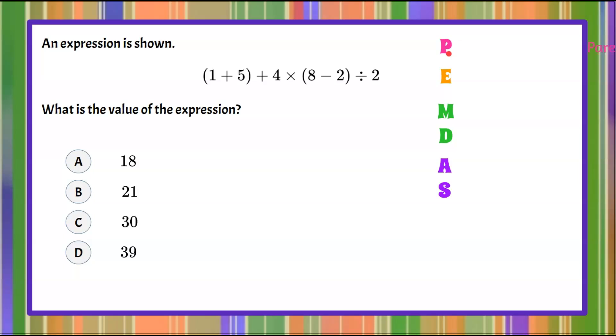So P represents parentheses. We're going to consider all the parentheses and evaluate them in order from left to right. So we have two sets of parentheses. 1 plus 5 is our numerical expression inside. 1 plus 5 is 6. So we're going to bring down that 6.